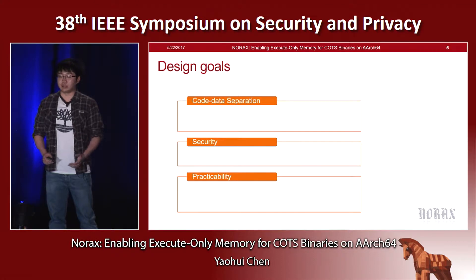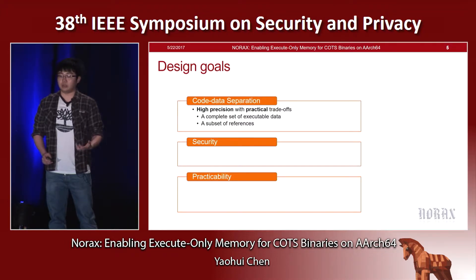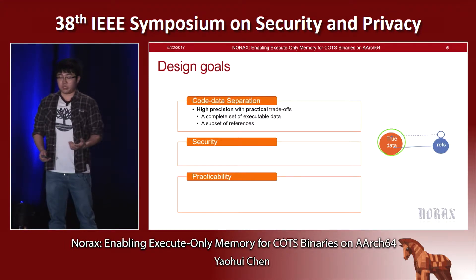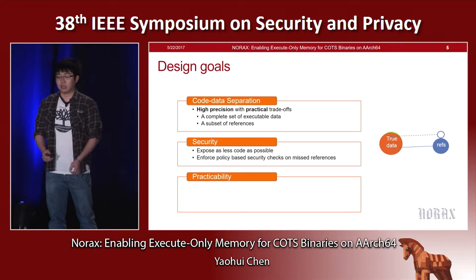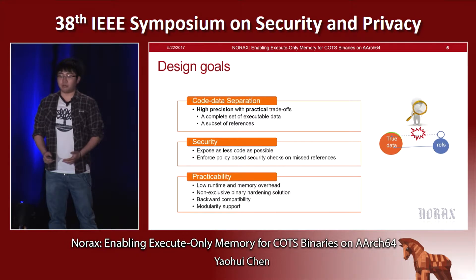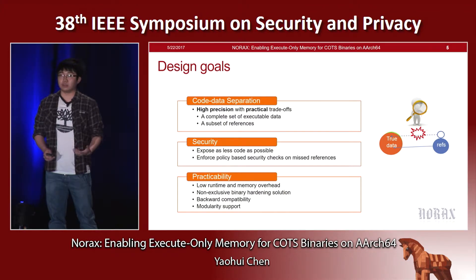Facing such challenges, we made the following design goals for NURX. Firstly, regarding code-data separation, we want analysis with very high precision. We want to make practical trade-offs: a superset of the executable data but only a subset of the references, resulting in a small exposed code region. We also have the security goal to expose as little code as possible and enforce runtime security policy-based checks to distinguish attackers from legitimate missed references. We also want NURX to be practical with low runtime and memory overhead, and non-exclusive to other hardening solutions such as fine-grained code randomization and CFI.